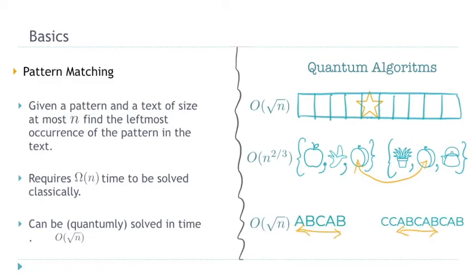Finally, pattern matching — a very famous problem. Given a text and a pattern, we want to know if the pattern appears in the text as a substring. Assuming the lengths of the pattern and text are bounded by n, we can solve it in linear time classically. But with a quantum algorithm, we can do it in time √n.